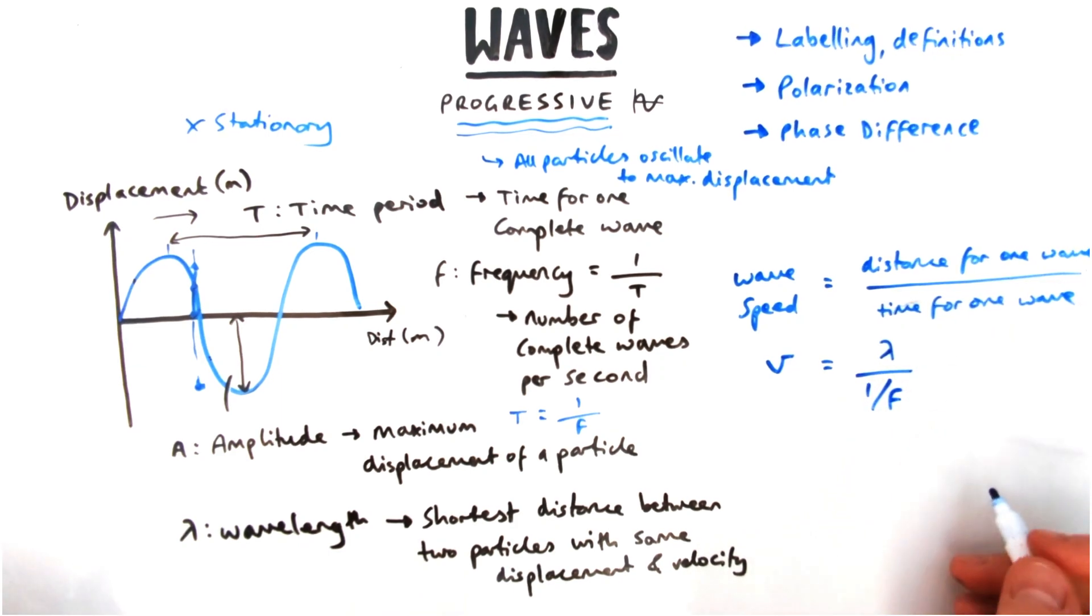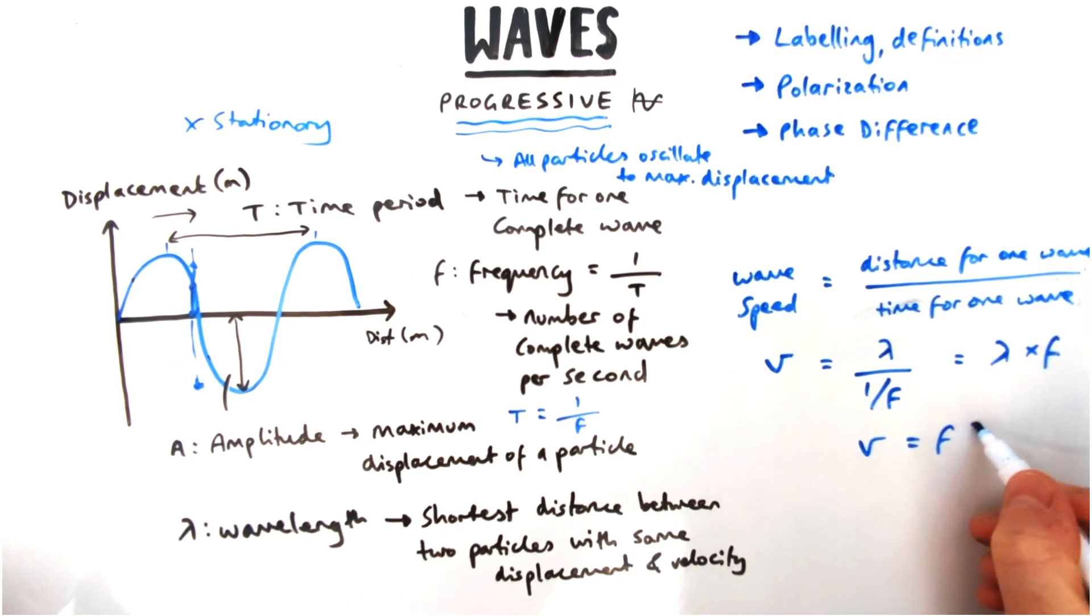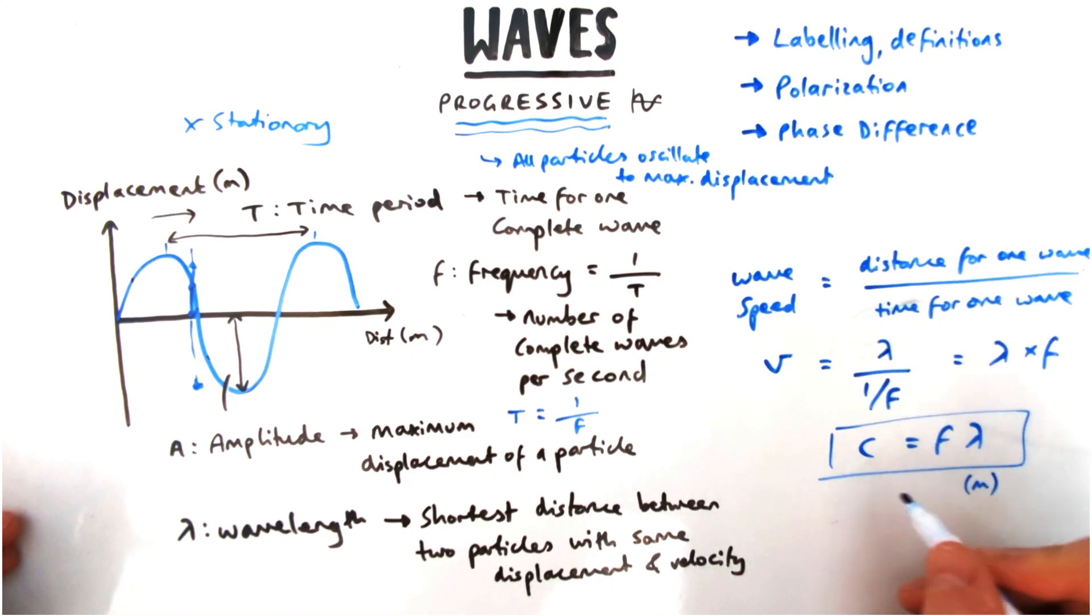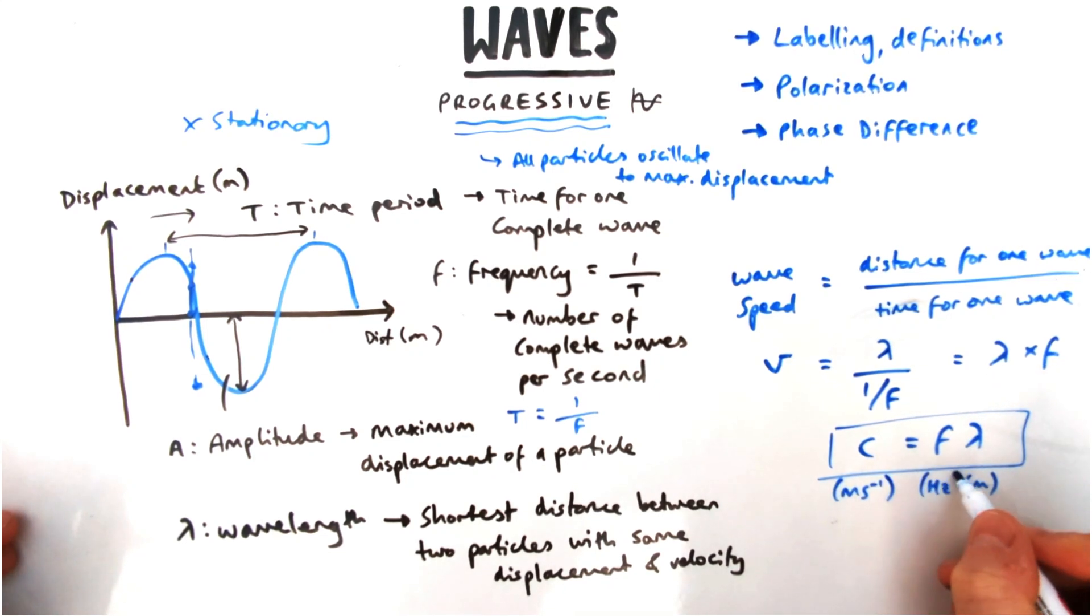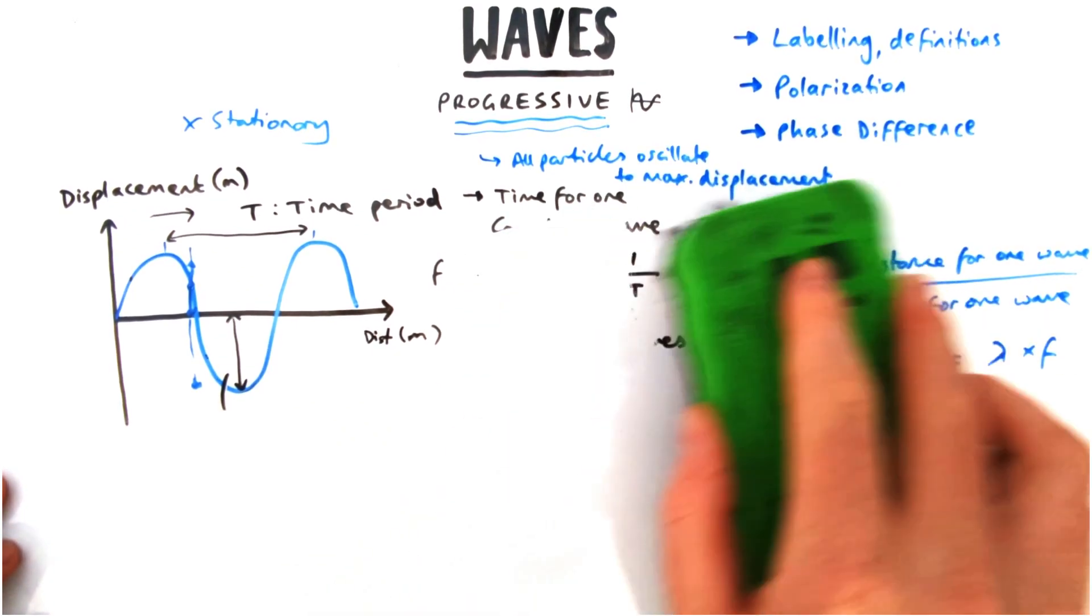I've got time for one wave and distance. Instead of time I can write down one over frequency because time period equals one over frequency. If I divide by a denominator that means I can put it on top. So speed, which you usually use the letter C for instead of V, is given by frequency times wavelength with the units given there on the screen. That's our labeling and definitions done.